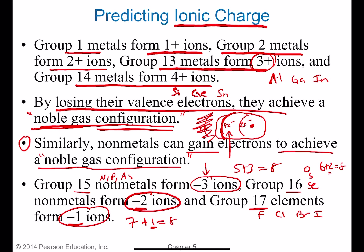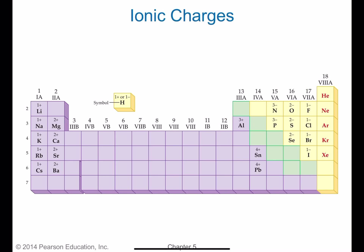We can predict the charge of an atom's ion simply based on its position in the periodic table. Group 18, the noble gases in the final column on the far right, have no charges listed. They are called noble — or inert — because they already have a complete outer shell. They're not going to want to gain or lose electrons, and since gaining or losing electrons is responsible for chemical bonding, this group does not participate in chemical bonding. They are non-reactive and inert.